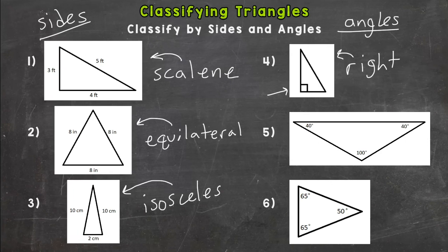Number five, we have angle measures of 40, 40, and 100. Do we have a right angle, a 90 degree angle in that triangle? No. So it's not going to be a right triangle.